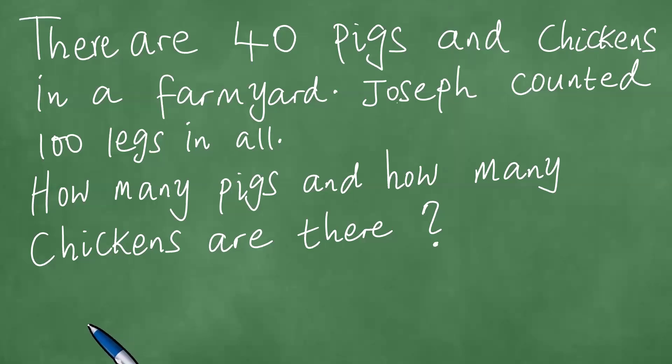In this lesson, we shall be solving this word problem in front of us. There are 40 pigs and chickens in a farmyard. Joseph counted 100 legs in all. How many pigs and how many chickens are there? And we solve this particular word problem step by step as follows.